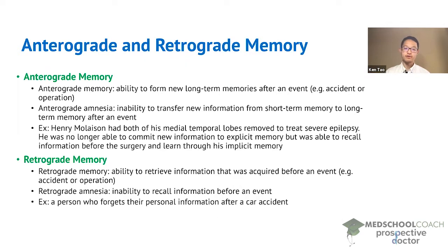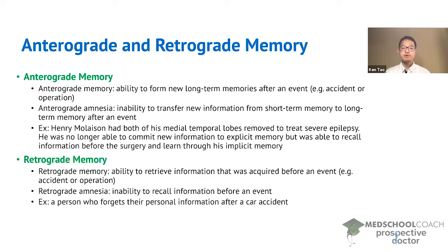When they refer to an accident, this would be for instance a car accident or some sort of traumatic event. The operation could be brain surgery. So after the event — for example, after a car accident — they are still able to form new long-term memories. Someone with enterograde amnesia has lost this ability, so they are unable to transfer new information from short-term memory to long-term memory after the event.